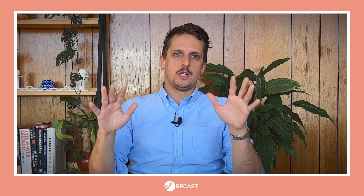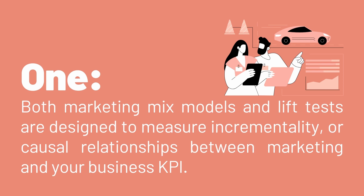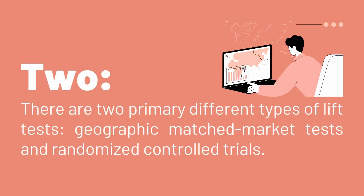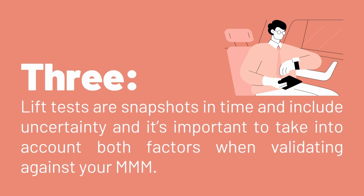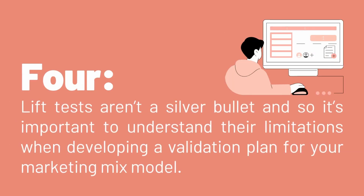Okay, that was a lot of information on validating with tests. Let's sum up the most important lessons from today. One: both marketing mix models and lift tests are designed to measure incrementality or causal relationships between marketing and your business KPI. Two: there are two primary types of lift tests — geographic match market tests and randomized controlled trials. Three: lift tests are snapshots in time and include uncertainty, and it's important to take into account both factors when validating against your MMM. Four: lift tests aren't a silver bullet, so it's important to understand their limitations when developing a validation plan for your marketing mix model.